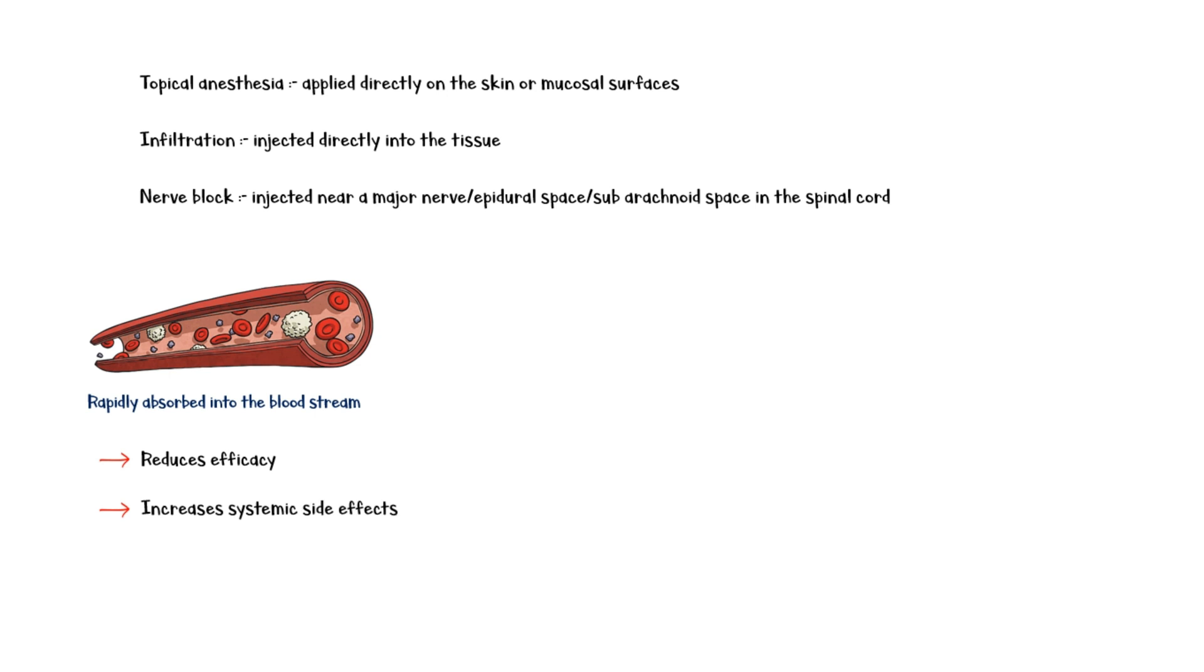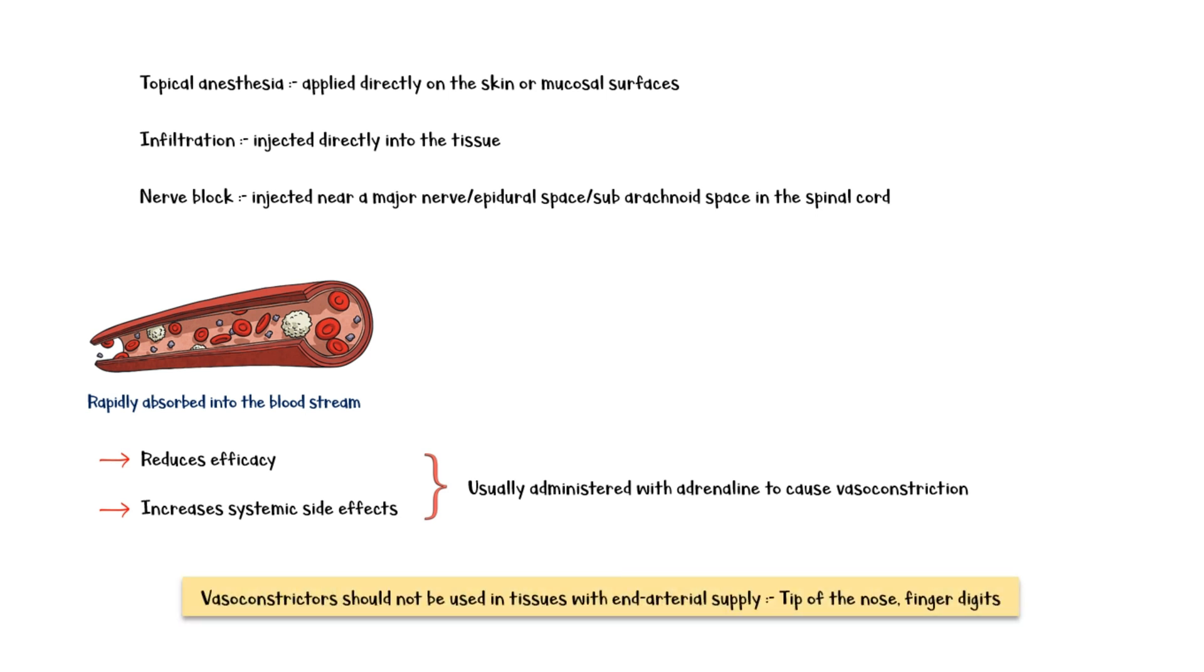Once administered, these medications are rapidly absorbed into the bloodstream. This will reduce the efficacy of the drug and increase the risk of systemic side effects. So to correct this, local anesthetics are usually administered with vasoconstrictors such as adrenaline. However, it is important to note that vasoconstrictors should not be used in tissues with an end arterial supply, as it can cause ischemia and necrosis of distal tissue.